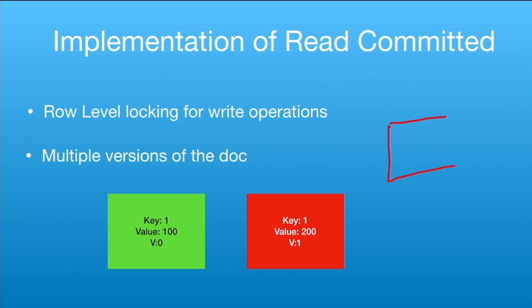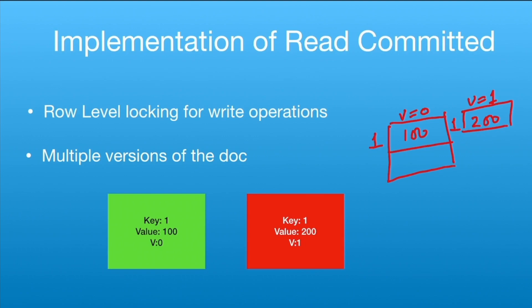To clarify: suppose we have a row with key=1 and value=100. When a transaction runs on this row, another version is created — same key, updated value, version=1, while the original is version=0. If a client reads during the transaction, it gets version=0. Version=1 keeps being updated as the transaction proceeds. Once the transaction commits, version=1 is migrated and all clients see the updated value. That's the high-level understanding of read committed isolation level.